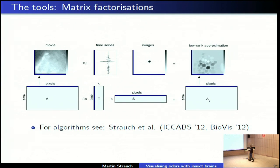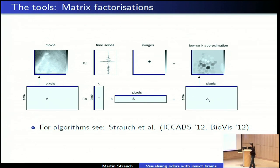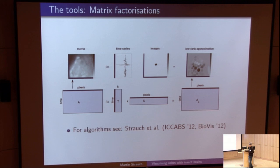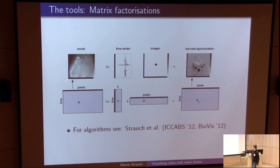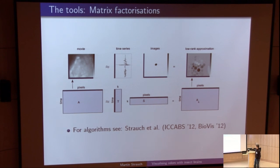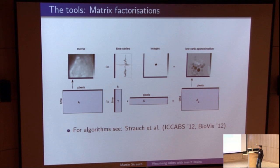How do we actually do that? We use matrix factorization as a general framework — for algorithm details you can refer to our papers, for example the one presented at BioVis last year. We take the images from a movie and fill them into a matrix, where each row represents a time point with pixels as dimensions — each row is an image from the movie, giving us a movie matrix. We factorize it into a small number K of time series and K images, which multiply together to give a matrix of the same size but with lower rank K — a low-rank approximation.